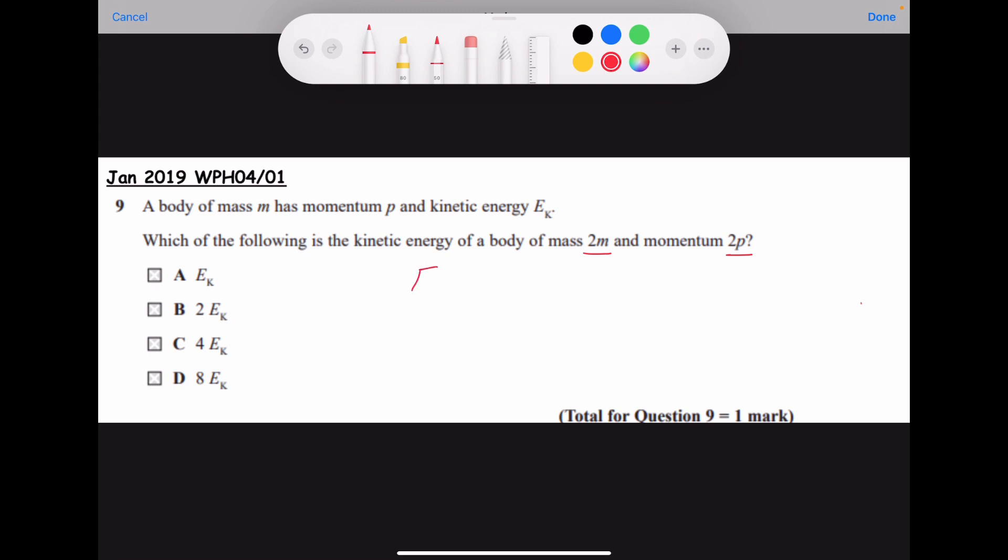The formula linking the kinetic energy ek equals p squared divided by 2m.